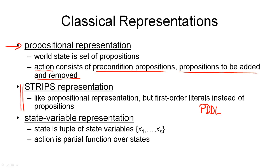This is another difference between the STRIPS representation as we've seen it so far and the propositional representation. In the STRIPS representation, we had positive and negative preconditions; now we only have positive preconditions. As it turns out, this isn't much of a restriction, as every STRIPS operator that has negative preconditions can be translated into an equivalent domain and operator that has no negative preconditions. So any problem representable in one of these two representations can be translated into the other without much difficulty.